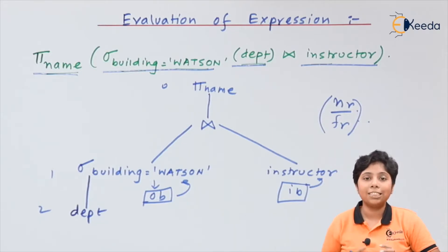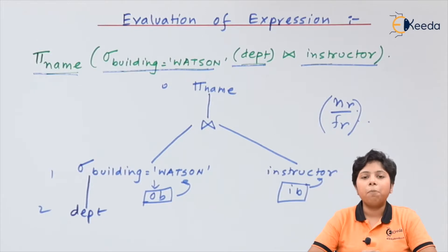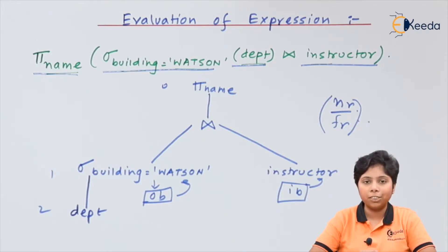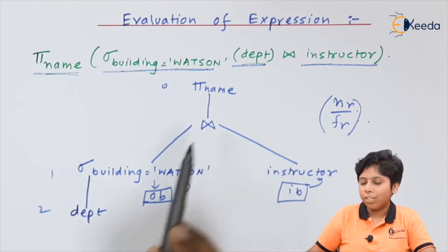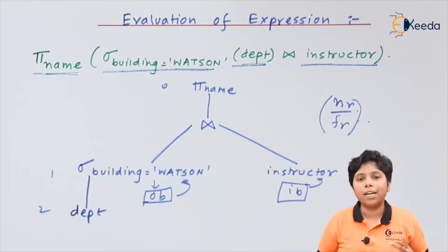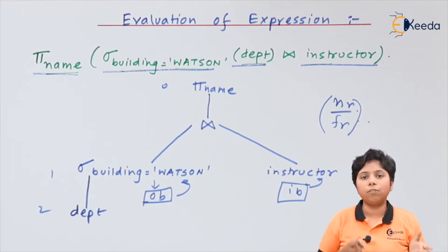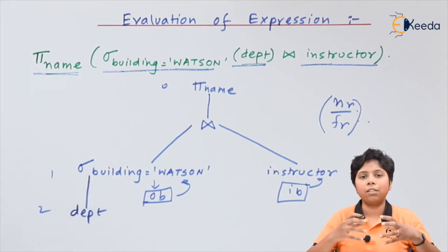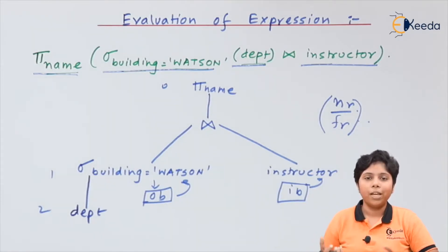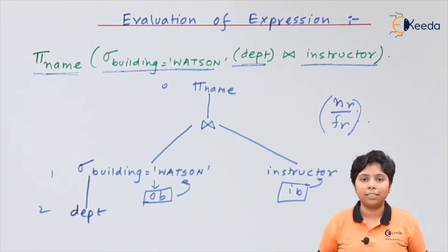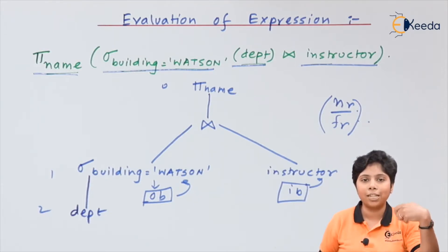The main problem with materialization is the iterator problem. If br is the block size of relation r and bb is the buffer size, we need br divided by bb number of block transfers. The issue is that one evaluation's result becomes the input to another. This is like a pipe — once the tap is opened, each pipe receives water and the bucket at the end collects it all, rather than waiting for one bucket to fill before filling the next.